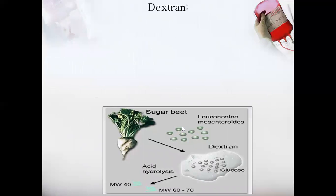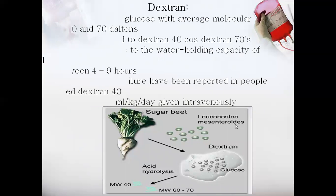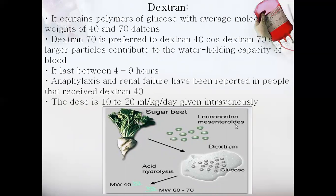Dextran is obtained from sugar beet when fermented in the presence of Leuconostoc mesenteroides microbes, which undergo fermentation of the sugar beet to produce dextran. On acid hydrolysis, it divides glucose molecules into two molecular weights — 40 and 70 — giving dextran 40 and dextran 70. Dextran 70 is preferred due to its larger particle size and greater water-holding capacity, lasting four to nine hours. However, dextran 40 has been associated with anaphylactic reactions and renal failure.